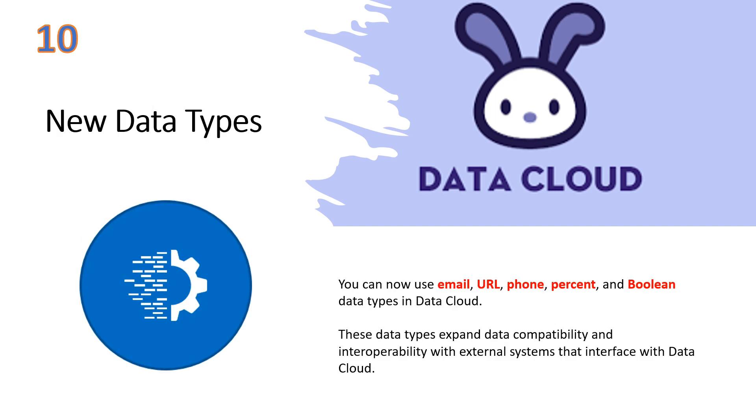Five new data types have been added to the Data Cloud: Email, URL, phone, percent, and Boolean data types can now be ingested.